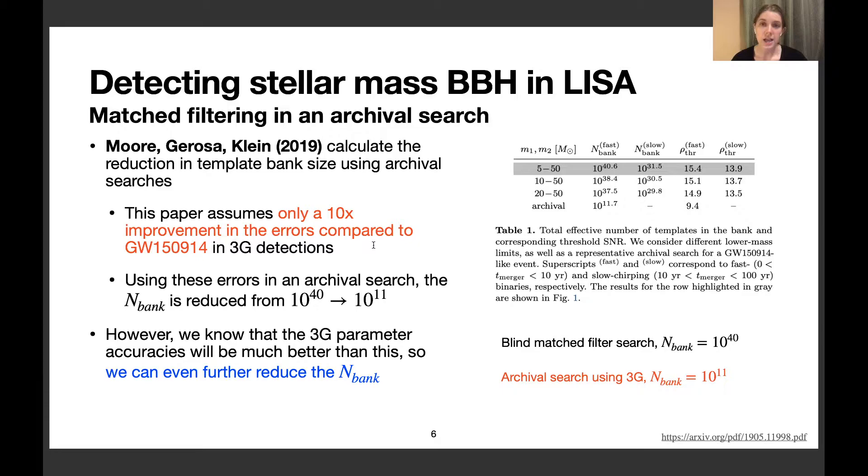They calculated they could reduce the template bank down to 10^11 templates. However, that's still too large to be computationally feasible. We want to show that by using a better estimate of third-generation parameter accuracies, we can reduce the template bank much further to where it's small enough to use in reality.